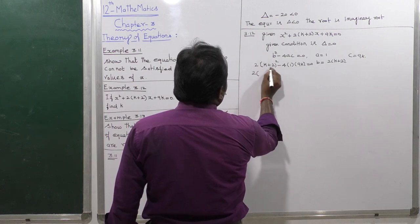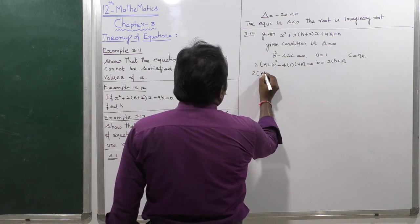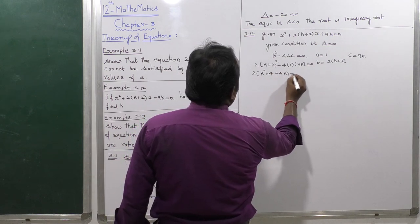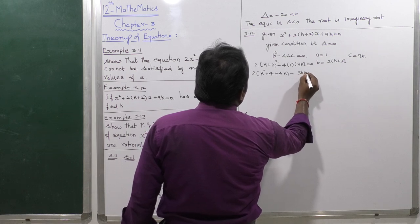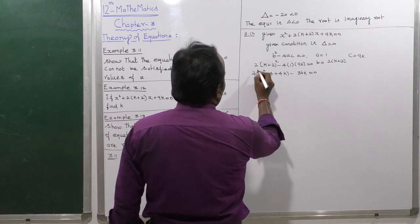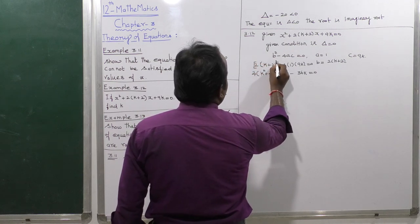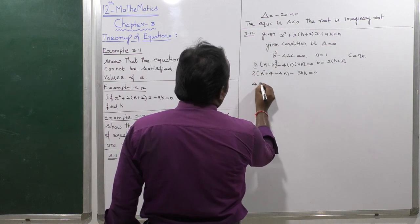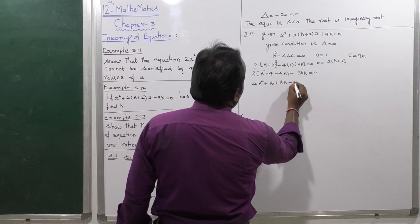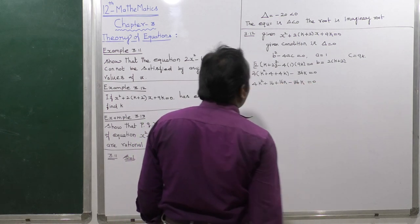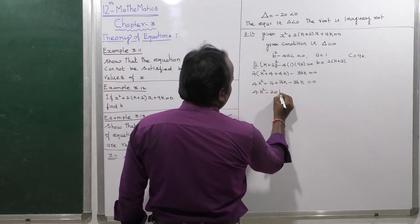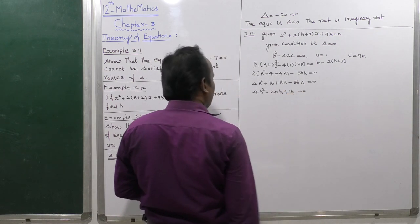Expanding 2 into (k plus 2) the whole square using the identity (a plus b) whole square equals a squared plus 2ab plus b squared gives 4k squared plus 16k plus 16. So we get 4k squared minus 20k plus 16 equals 0.